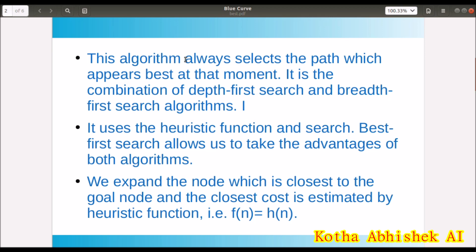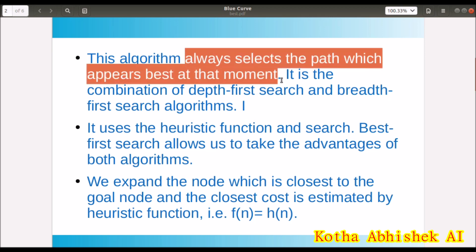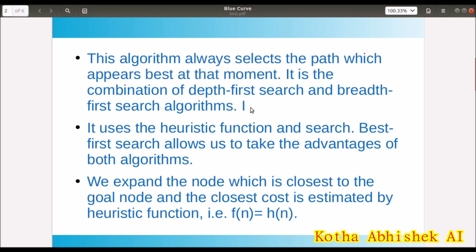This algorithm always selects the path which appears best at the moment. It is the combination of DFS and BFS. So we will choose the present node which is best for that node. We will select the heuristic instead of checking from the start node.